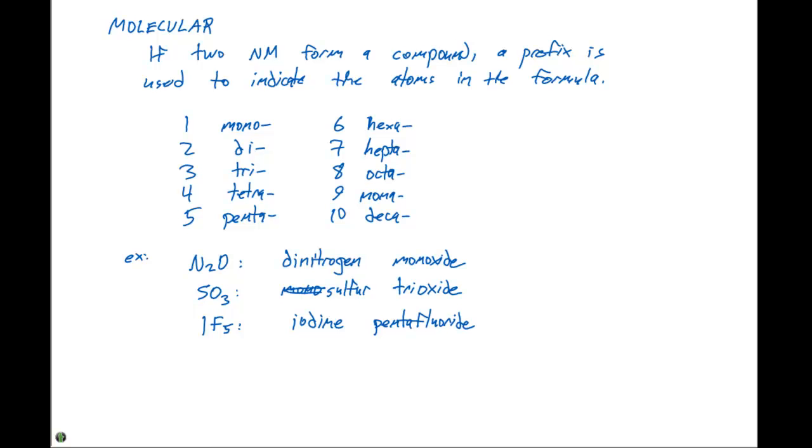Okay, we can do the same thing by going from the written formula in words to the chemical formula. So if we have dinitrogen tetroxide, dinitrogen, there's gonna be two of them, so it's gonna be N2 tetroxide O4.